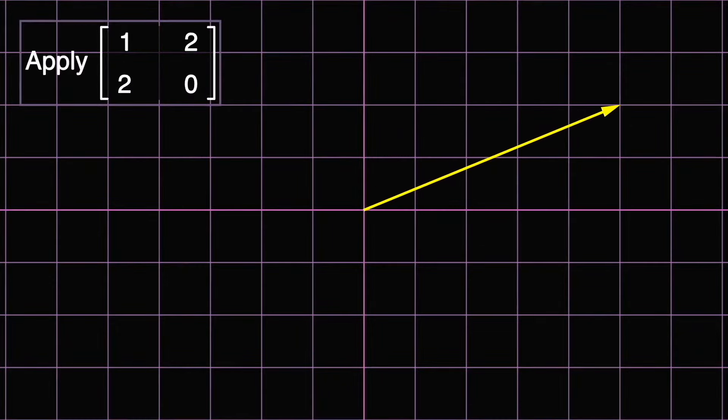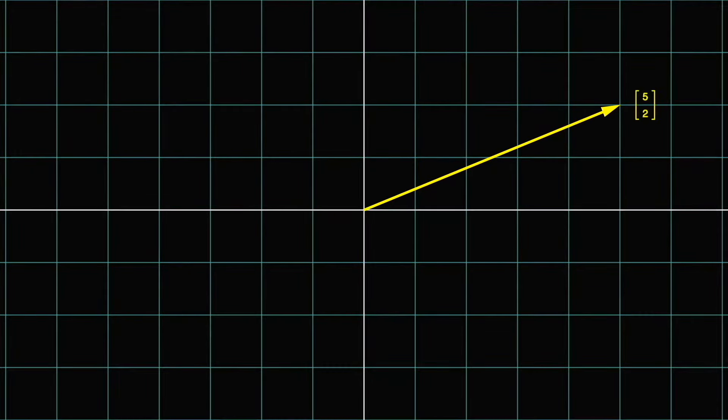Firstly, we represent a vector as a physical arrow sitting in a two-dimensional space. And as a vector gets multiplied by the matrix, the tip of the arrow moves from the coordinate (1, 2) to the coordinate (-1, -2). So that was visualization for one vector.